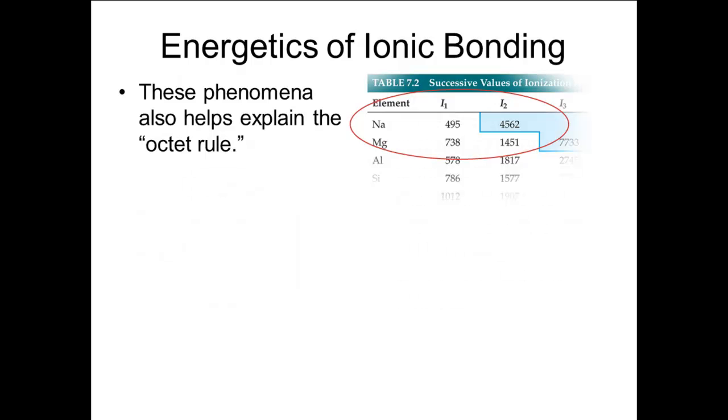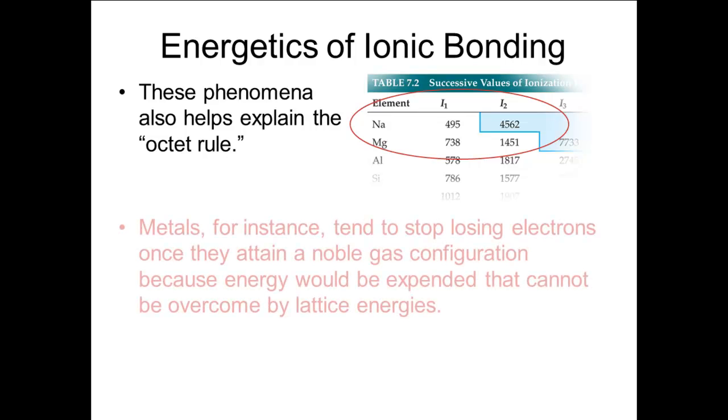Understanding these factors helps to explain things like the octet rule. For metals, the energy needed to remove electrons increases dramatically when the valence shell has been emptied. To remove another electron requires so much more energy that the lattice energy would not be able to overcome that to produce a net loss of energy.